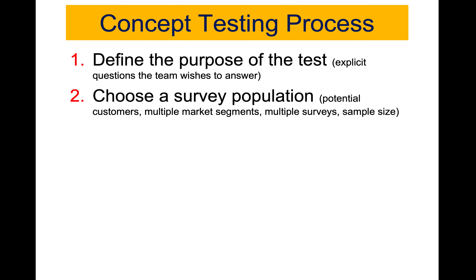Step two: you need to choose a survey population. We are now getting into the process of identifying our target market. You need to make sure that the population of potential customers surveyed reflects the target market for the product. At the beginning of your survey, you should include screener questions — questions to verify that the respondent fits the definition of your target market.